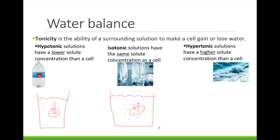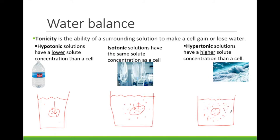The last possibility is a hypertonic solution, which has a higher concentration of solute than the cell. An example would be placing the cell in salt water. With a high concentration of solute in the water, the water inside of the cell is going to move out into the solution. The net water movement is going to be out of the cell. There is a little bit of movement of water into the cell, but not very much. This could cause the cell to shrink up or shrivel.